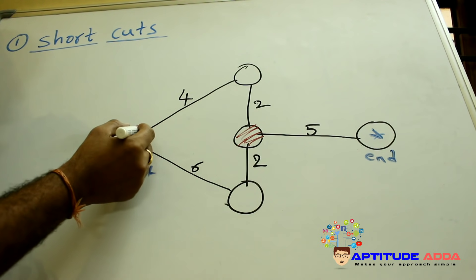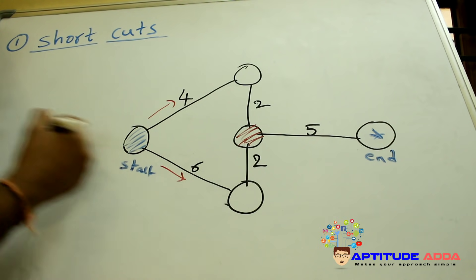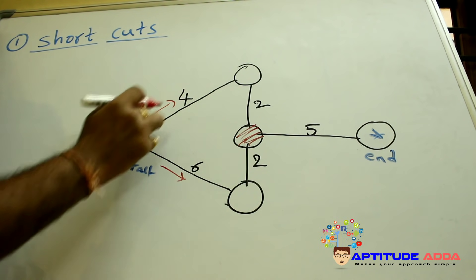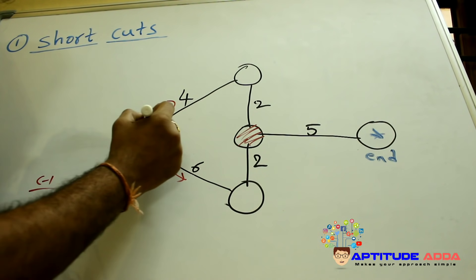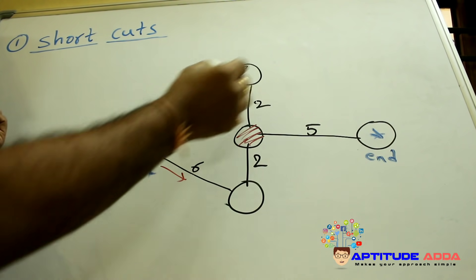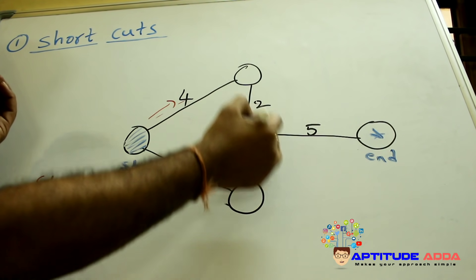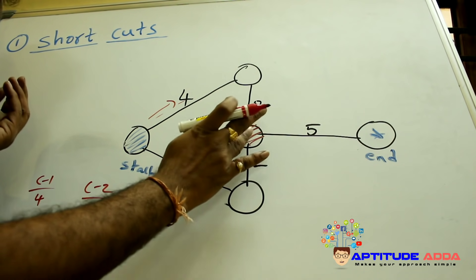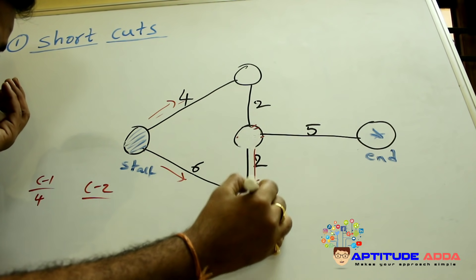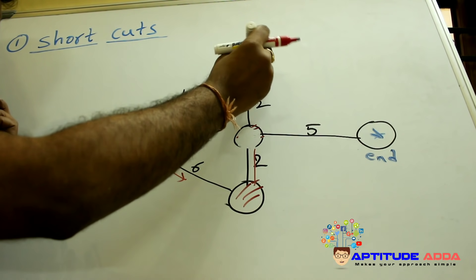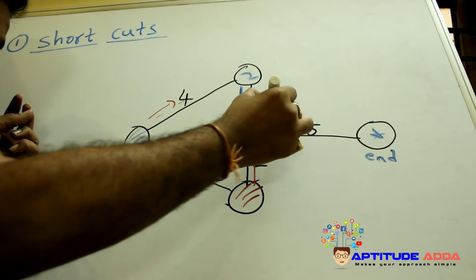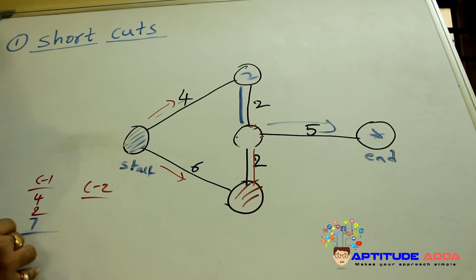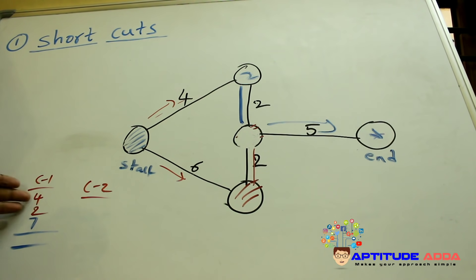This problem can be solved in two ways: either the blue ball moves in one direction (case one, towards four units) or the other direction (case two, towards six units). In case one, the blue ball moves four units, but a red ball is in the middle, so we move the red ball by two units. Then the blue ball can move two plus five, totaling seven units. Total distance traveled: 4 + 2 + 7 = 13 units.